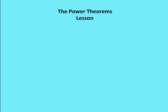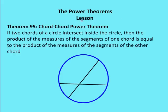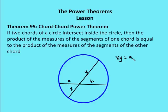So let's talk about the first power theorem. The first one is the chord-chord power theorem. It says if two chords of a circle intersect inside the circle, then the product of the measures of the segments of one chord is equal to the product of the measures of the segments of the other chord. So if this is X and this is Y, and this is segment A and this is segment B, then X times Y is equal to AB.